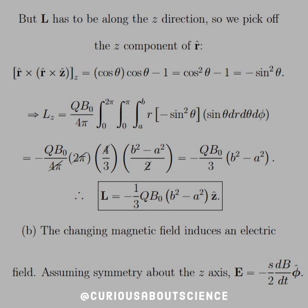Now, for part B, the change in magnetic field induces an electric field. So, we have the EMF and back EMF, all those things from chapter 7 now coming back in effect here. So, if we're assuming symmetry about the Z axis, which we have that, E would equal negative s over 2 dB/dt in the phi hat direction. Again, because the torque is making it rotate in the Z direction.